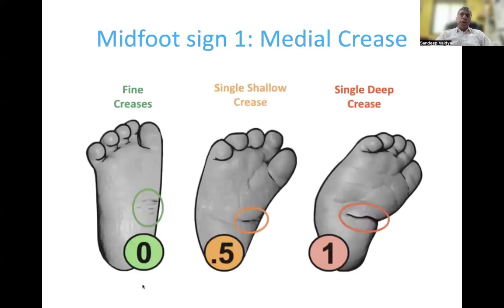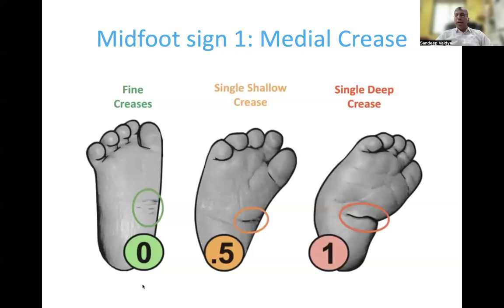Taking up each sign one by one, the first midfoot sign is the medial crease. If there are multiple fine creases along the medial border of the foot, the score assigned is 0. A single shallow crease is given a score of 0.5 and a single deep crease is given a score of 1. For reference, you can look at your thumb — the fine creases along the thenar eminence resemble the creases for score 0, the crease of the interphalangeal joint of the thumb with the thumb extended would get a score of 0.5.